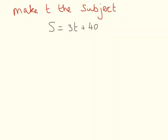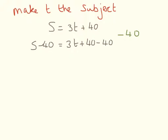Here we need to make t the subject of the formula. The first thing we need to do is to minus the 40, so s minus 40 equals 3t plus 40. We need to do the same to both sides, minus 40. Of course we have a plus 40 and a minus 40 here, and they cancel each other out, so we end up with s minus 40 equals 3t.